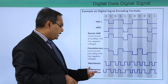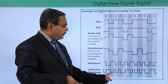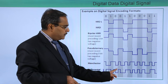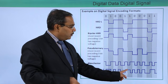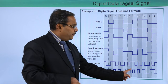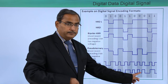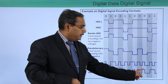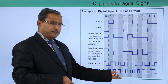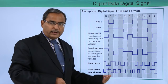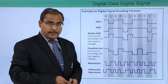Let us work through the Differential Manchester example. 0 means transition at beginning and middle, 1 means only at middle, 0 means at beginning and middle, 0 means transition at beginning and middle, 1 means only at middle, 1 means only at middle, 0 means at beginning and middle, 0 means at beginning and middle, 0 means at beginning and middle, 1 means only at middle, 1 means only at middle. Please note: if any transition appears not exactly at the middle, consider that it is at the middle.